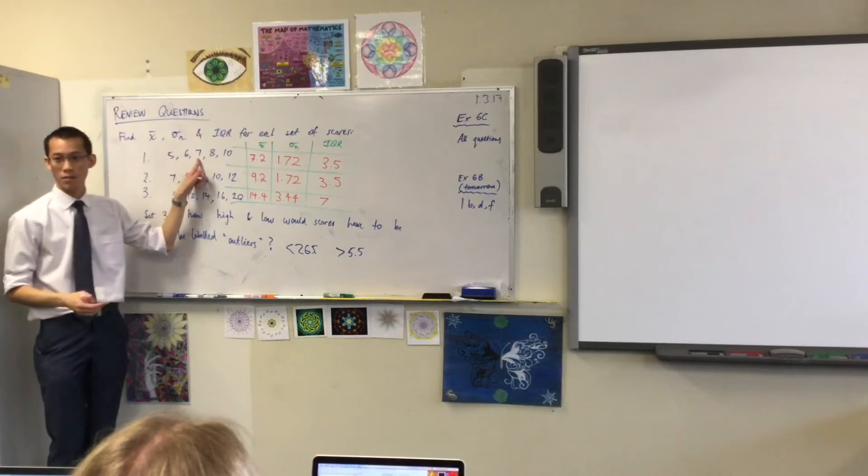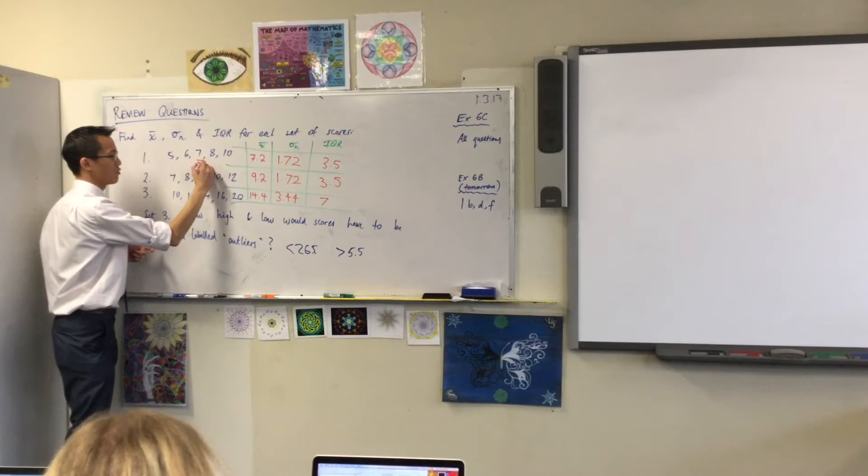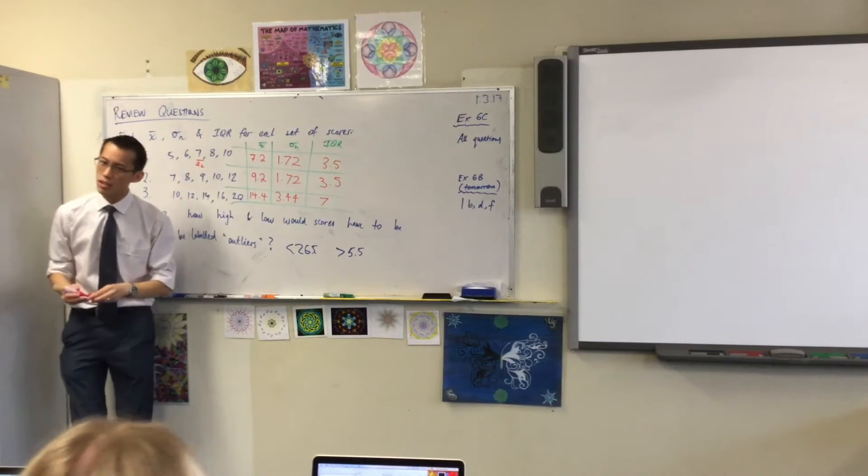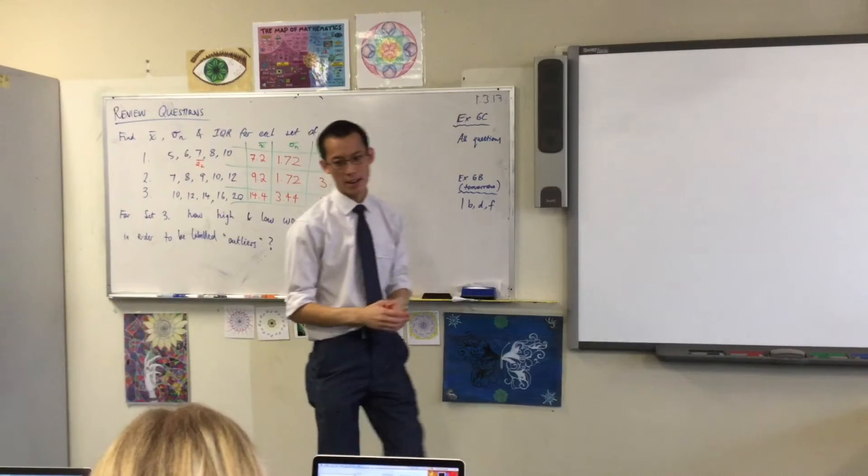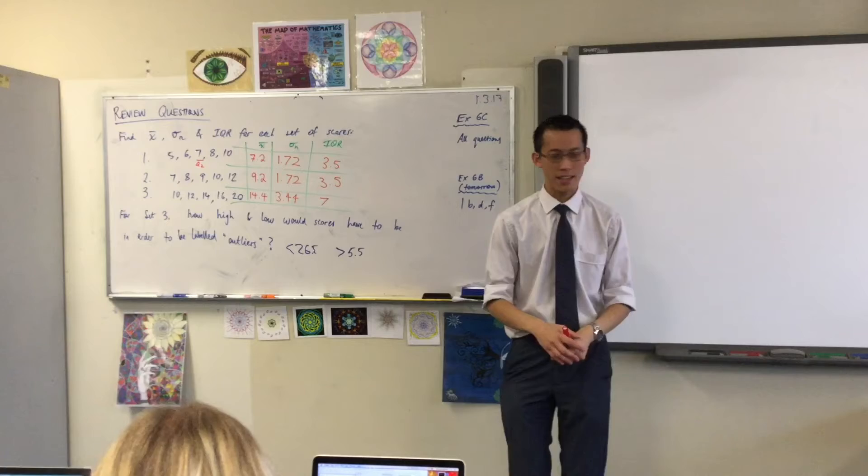What is the median, say for this one? Seven. It's just the middle score, right? So that is Q2. Q1 and Q3 though, they're a little bit tricky, and if you don't have a calculator that just hands it to you, it's easy to make a mistake here.